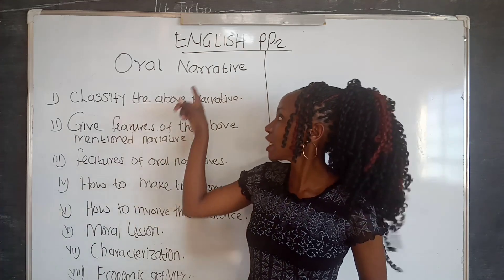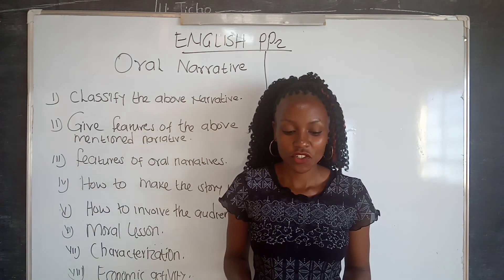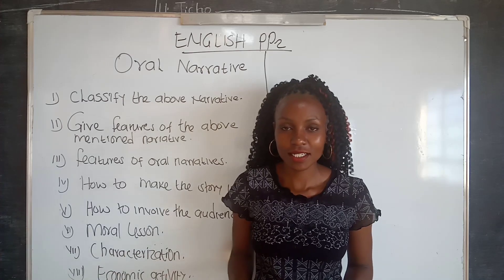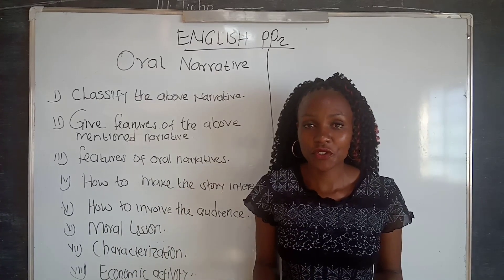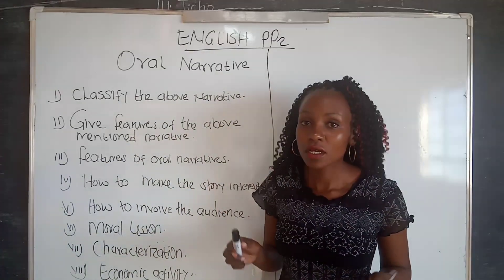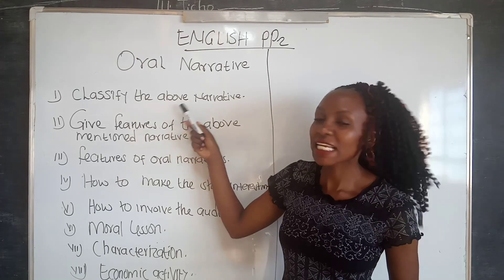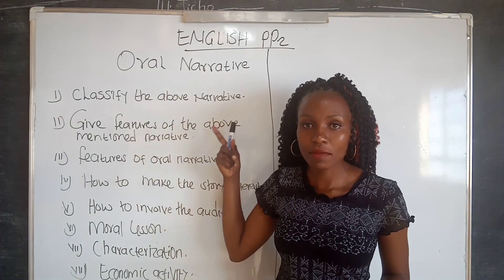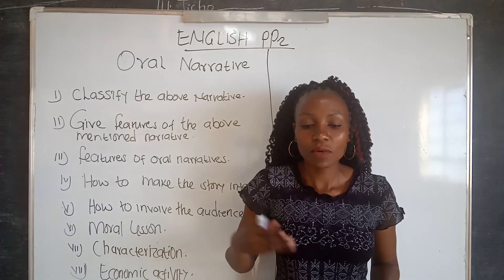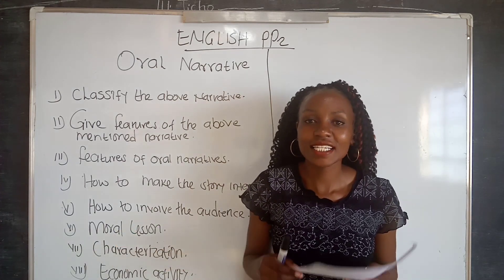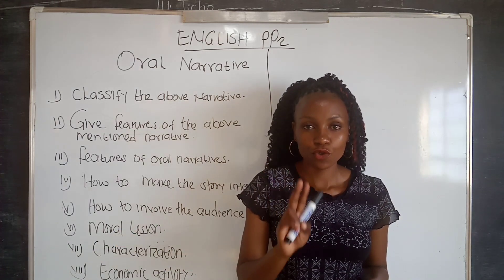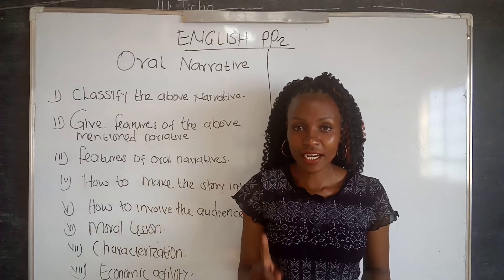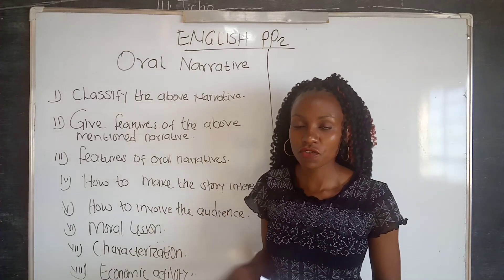In this lesson, we are going to learn how to answer questions based on oral narratives and how to score full marks. In most cases, the first question on the narrative section is always 'classify the above narrative,' worth maybe two marks or one mark. You are supposed to do two things: identify the type of narrative and then give a reason for your answer.